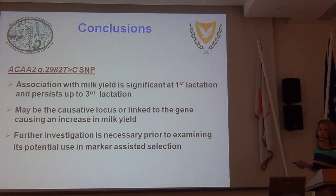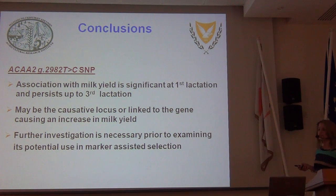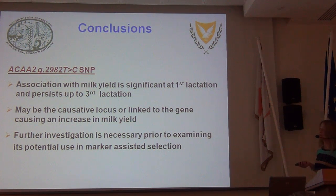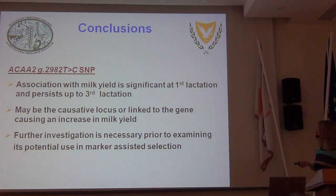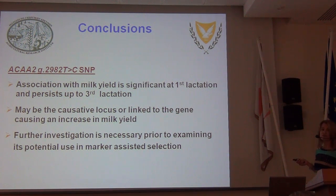Coming to the conclusions: we found that the ACAA2 T2C SNP associates with milk yield, and this association is significant at first lactation and persists up to the third lactation. As Dr. Orford also pointed out, this could be the causative locus driving the increase in milk yield, but it may well be linked to the gene causing this change in phenotype. Therefore, further investigation is necessary to examine its actual mode of action, along with its effects on other important traits, before examining its potential use as a marker in marker-assisted selection.